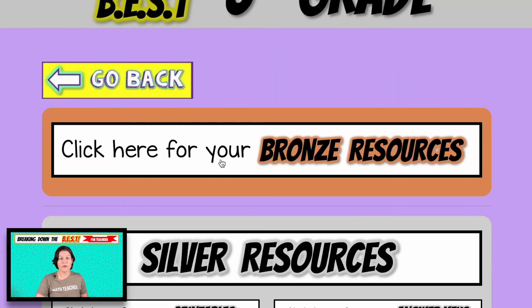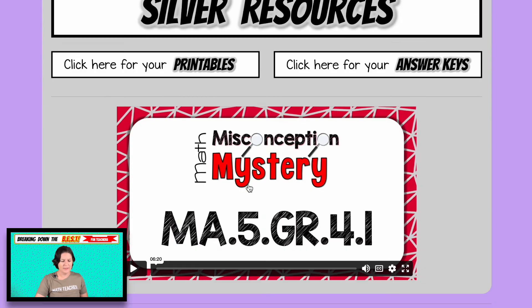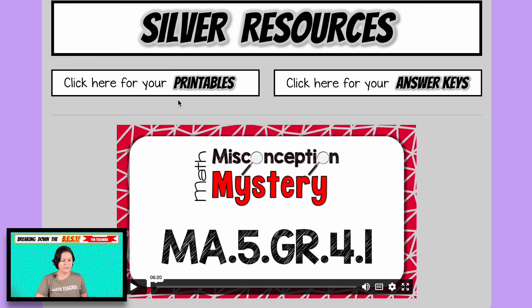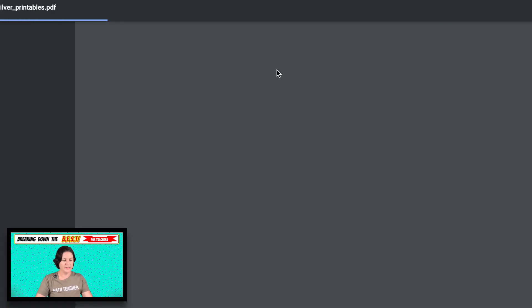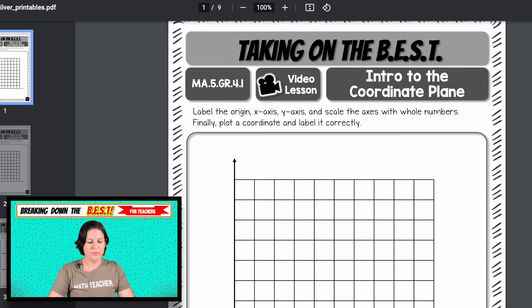So those are your bronze resources. If you have the silver or the gold plan, you click right here. You can go back to those video lessons at any time. Then right here, we've got some printables and then also a video lesson and your answer keys.